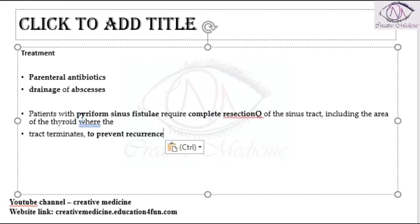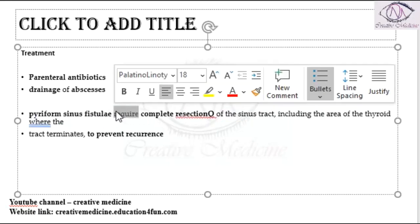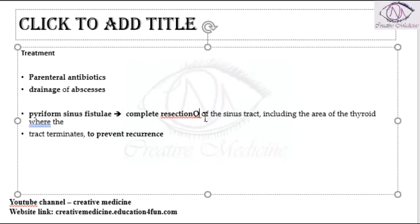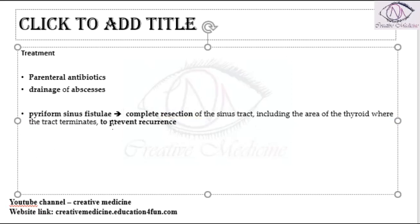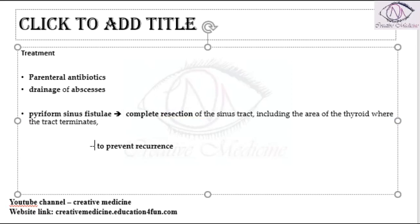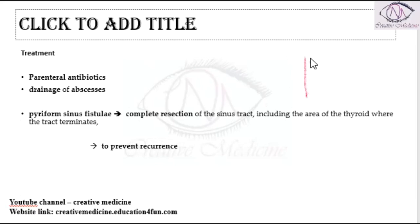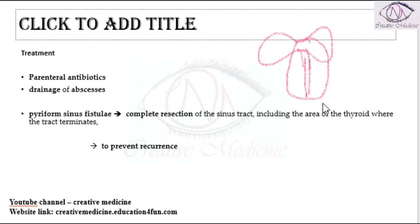If the patient has a persistent pyriform sinus, a complete resection of the sinus tract is very important, along with resection of the area that the tract communicates with. For example, if the pyriform sinus is communicating with the thyroid tissue, you must remove the pyriform sinus and also remove the part of the thyroid in relation to the pyriform sinus fistula or tract.